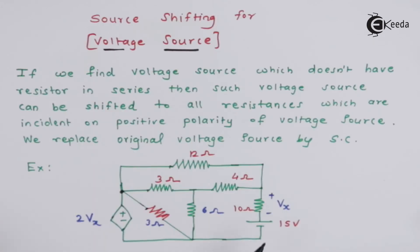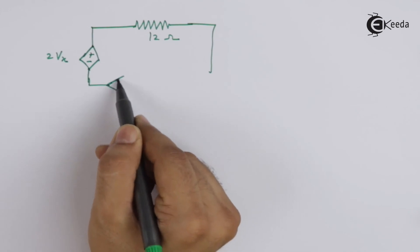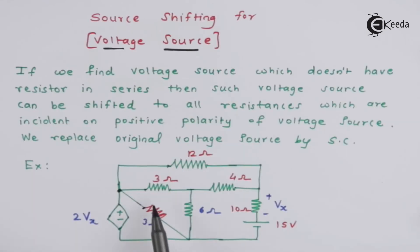Now secondly it is 3 ohm resistance. So again for these 3 ohm resistance also, I have given the same voltage source whose value is 2 into Vx, with this positive terminal here.